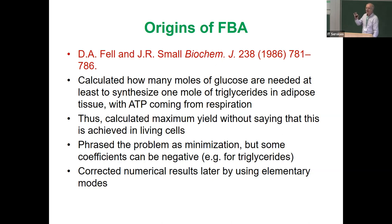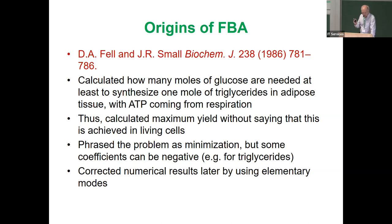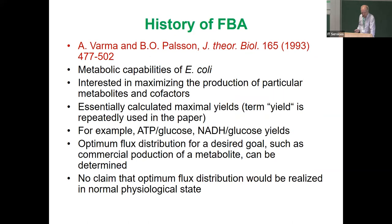In older textbooks, the ATP yield from respiration was written as 36 or even 38 moles per mole of glucose, but it has been reduced more and more — now it's about 30. Importantly, Fell and Small calculated this maximum yield without claiming it is really achieved in living cells — it's just what can at best be expected. David Fell later told me they found a mistake in the paper, and corrected numerical results using elementary modes.